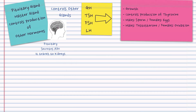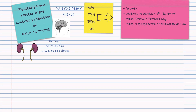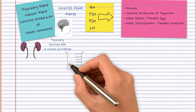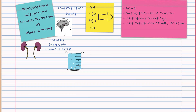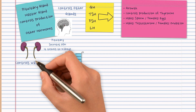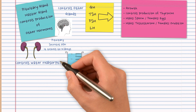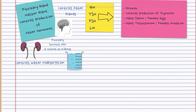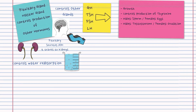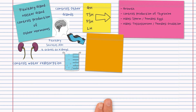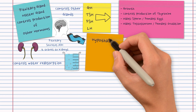The pituitary secretes anti-diuretic hormone, otherwise known as ADH. It travels in the blood to the kidneys, where it's involved in ensuring more water is reabsorbed. However, the pituitary does not make this hormone — it's actually made by the hypothalamus, which is located just above the pituitary gland.